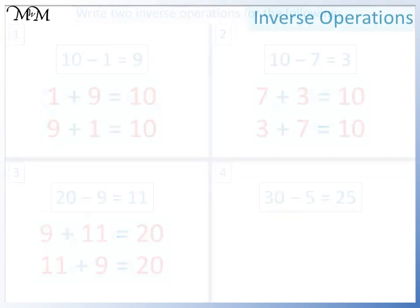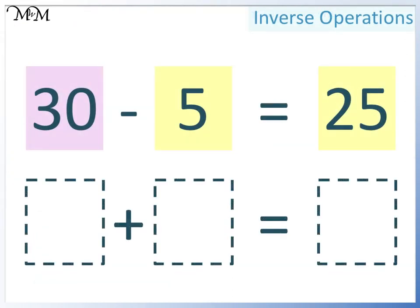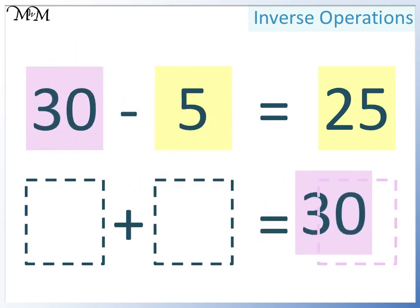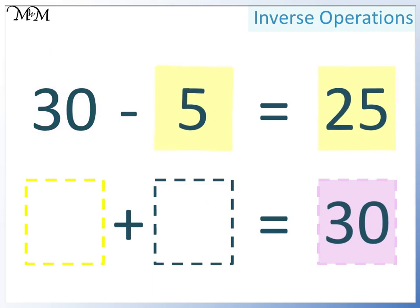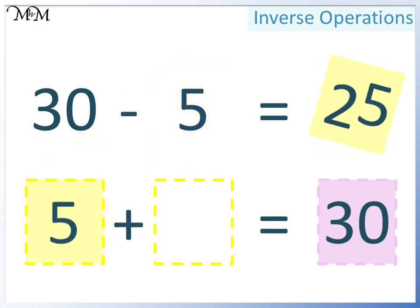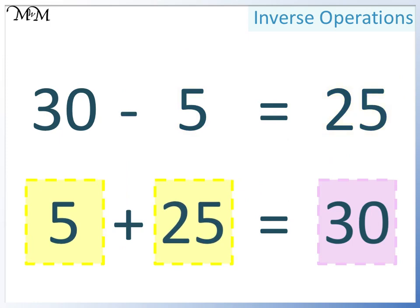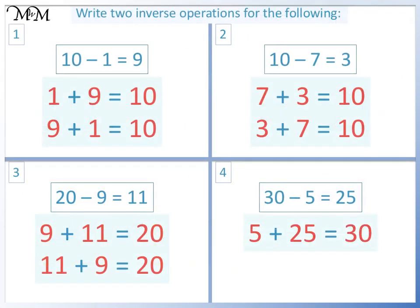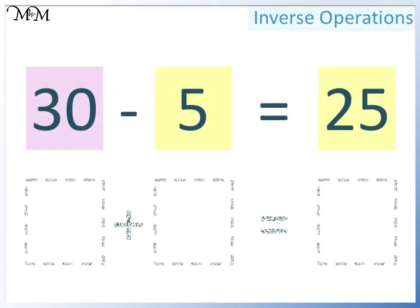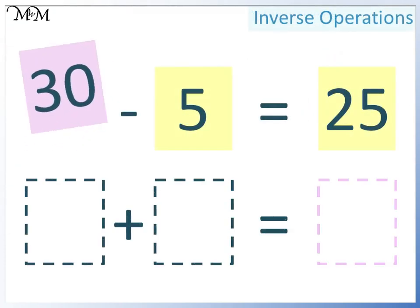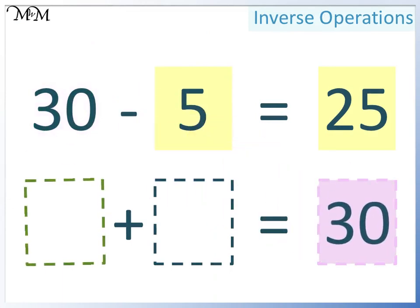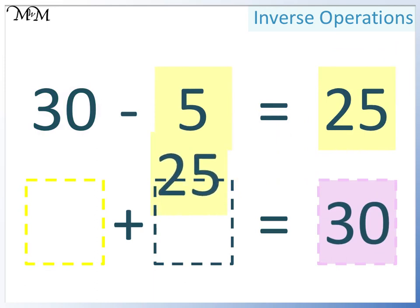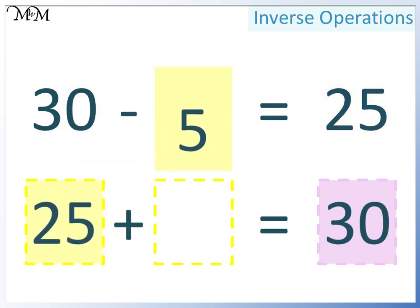Question 4: 30 take away 5 equals 25. The largest number goes at the end. Either of the two smaller numbers go here — this time we will have 5, and so 25 goes here. 5 plus 25 equals 30. We can write this a second way: again, 30 goes at the end. This time we will write 25 here, and so 5 must go here. 25 add 5 equals 30.